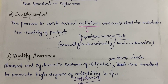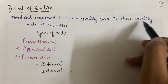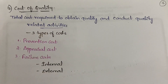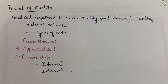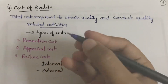The fourth quality concept is cost of quality. Cost of quality is the total cost required to obtain quality and conduct quality-related activities — that is, how much money you are spending in order to achieve quality and perform quality-related tasks.